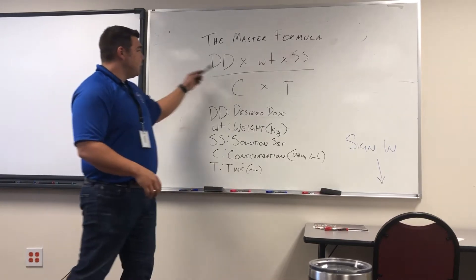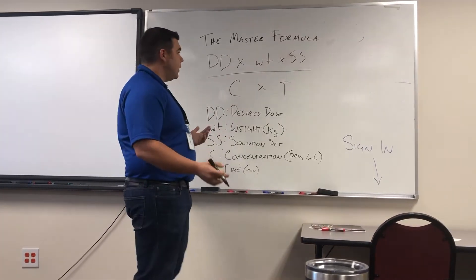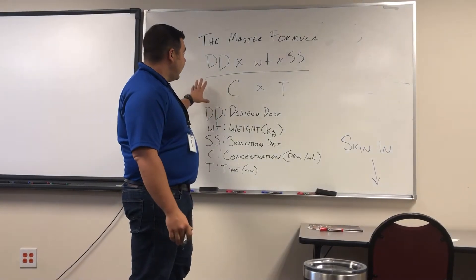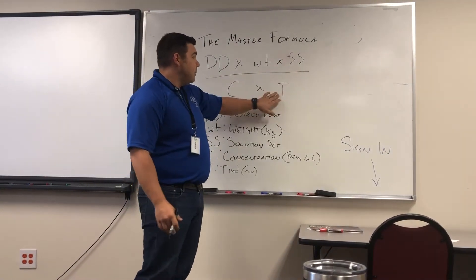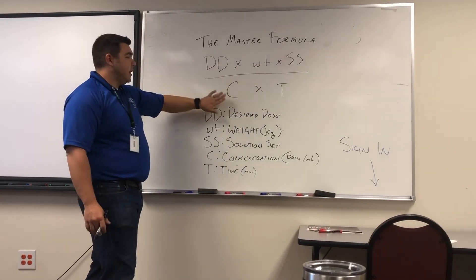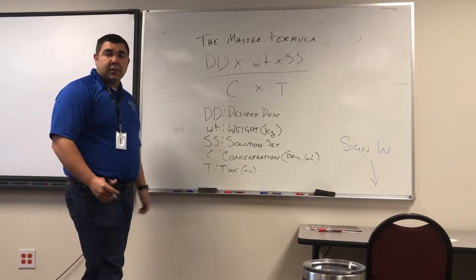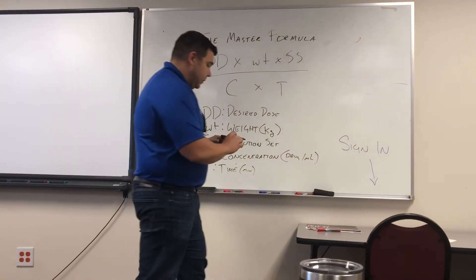You're going to use the different components based on the type of dose you have. If it's a drip or an infusion, you're going to definitely be using a solution set in time. And if it's weight-based, you'll be using weight. You're always going to have the desired dose and the concentration component for every medication you're going to be administering. So let's do one of the most difficult ones, the dopamine drip.